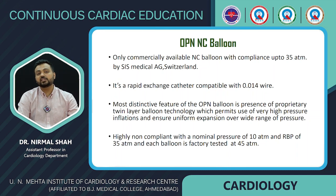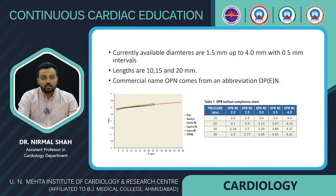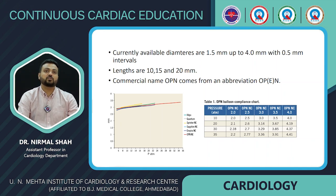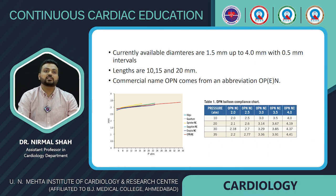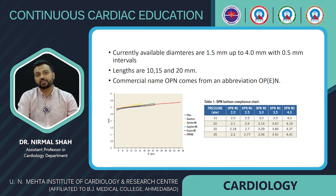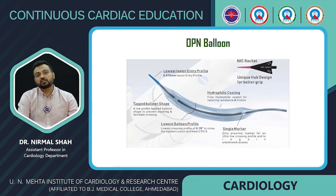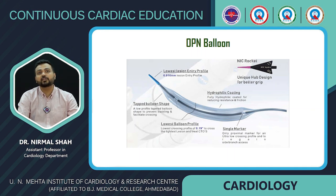The Opium balloon is available in diameters from 1.5 mm to 4 mm in 0.5 mm intervals, and lengths of 10, 15, and 20 mm. The name 'Opium' comes from the abbreviation 'OPEN' with the 'e' silent. Comparing the Opium balloon with other NC balloons, its compliance extends to 35 atmospheres while the majority of other balloons have compliance around 20–22 atmospheres. Its design features include the lowest lesion entry profile, tapered balloon shape, lowest balloon profile, hydrophilic coating, a single marker, and a unique design for better grip.